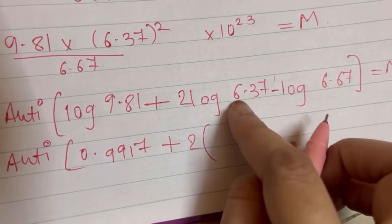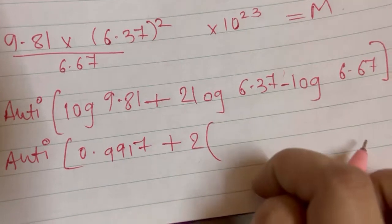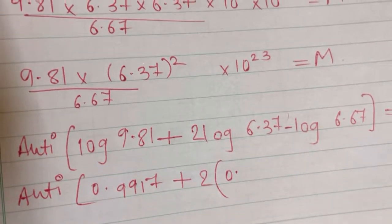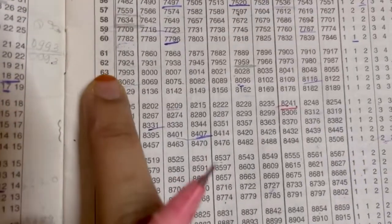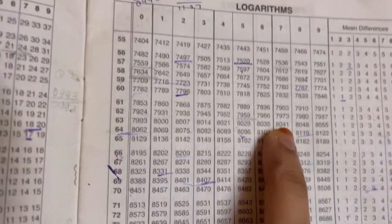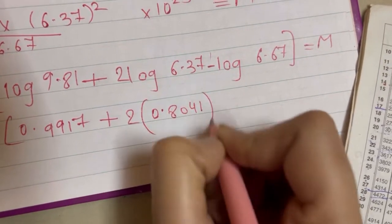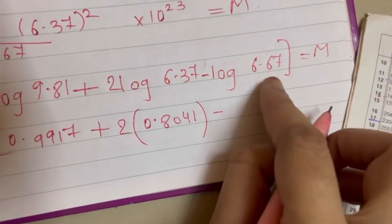Log of 6.37, if you notice before point we have just one digit, so 1 minus 1 is 0 point. 63 ka 1, 63 ka 7, we will look for 63 ka 7, that is something over here, 8041, so 8041 minus 6.67.